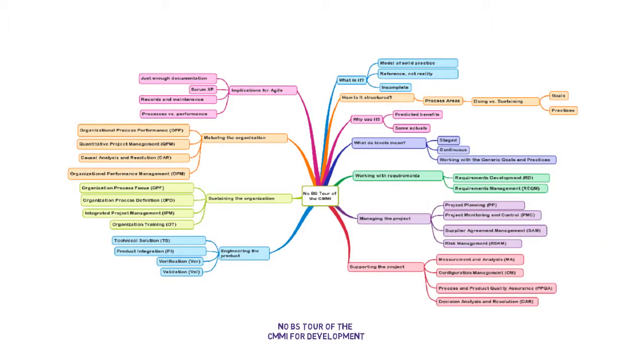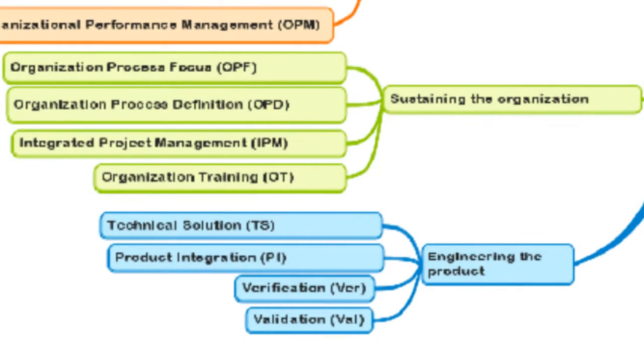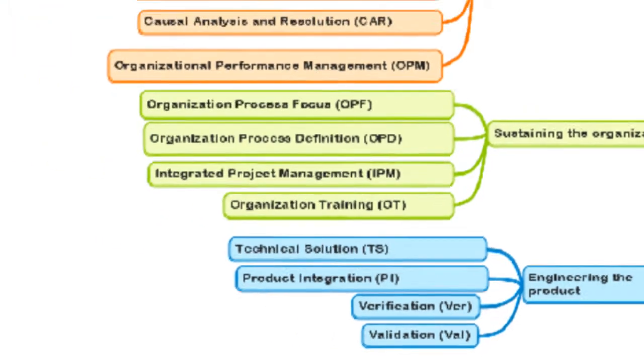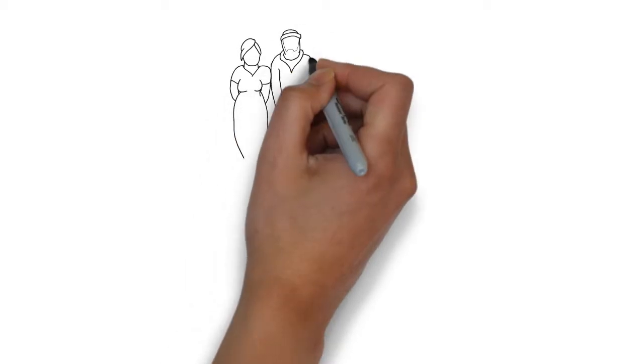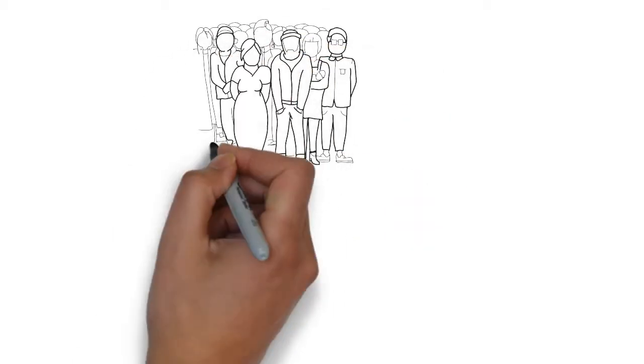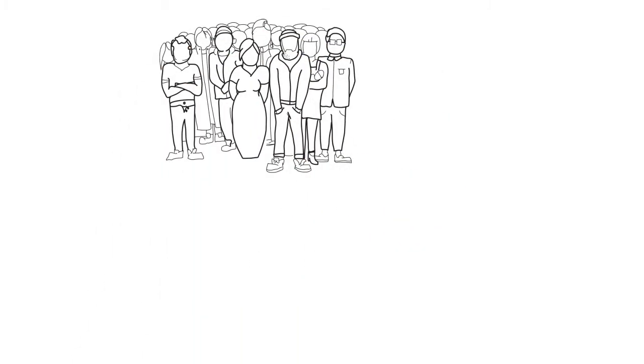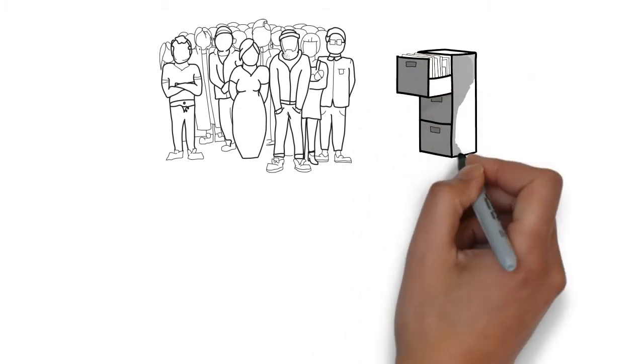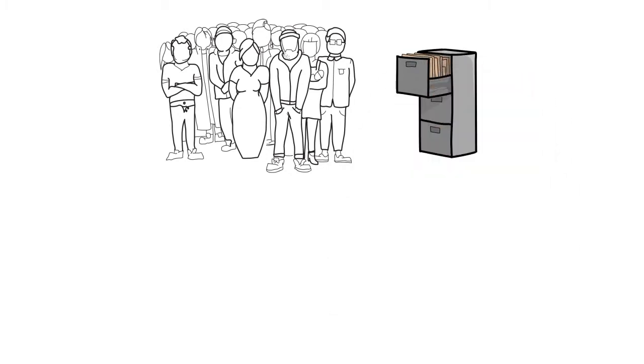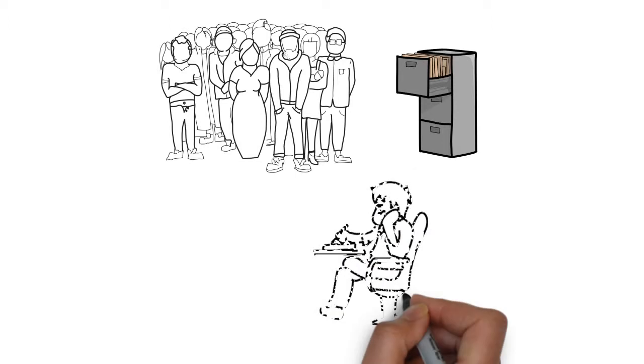In this segment, we'll look at the process areas that help an organization capitalize on the learning and improvement at the project level and leverage it across projects. Essentially, it involves having a focus on improvement at the organization level, usually by means of an improvement team, having a place to store and retrieve process and performance information, including standard processes and tailoring guidelines, and making sure everyone is skilled in the areas that are critical to the organization.